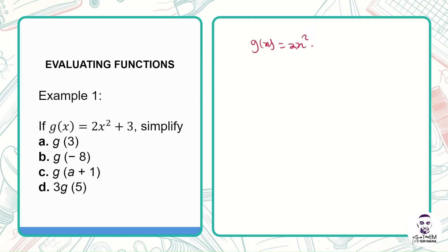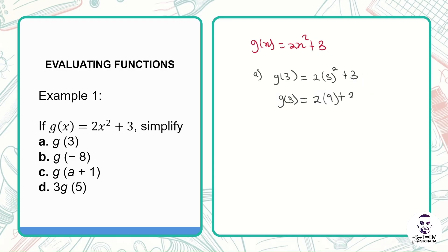In part (a) we are expected to evaluate g of 3. By now we know that for g of 3, wherever we see x in the expression g of x, we put 3 there. So we have 2 multiplying 3 squared plus 3. Now 3 squared gives us 9, so g of 3 becomes equal to 2 multiplying 9, which gives us 18, plus 3. So g of 3 equals 21. That means domain 3 gives us range 21.